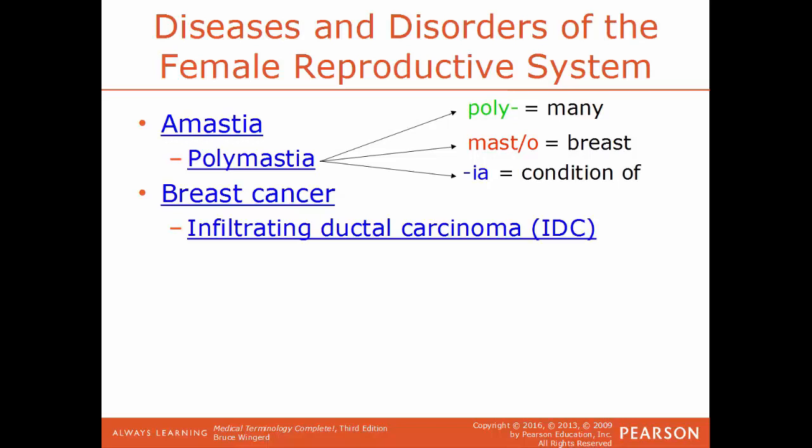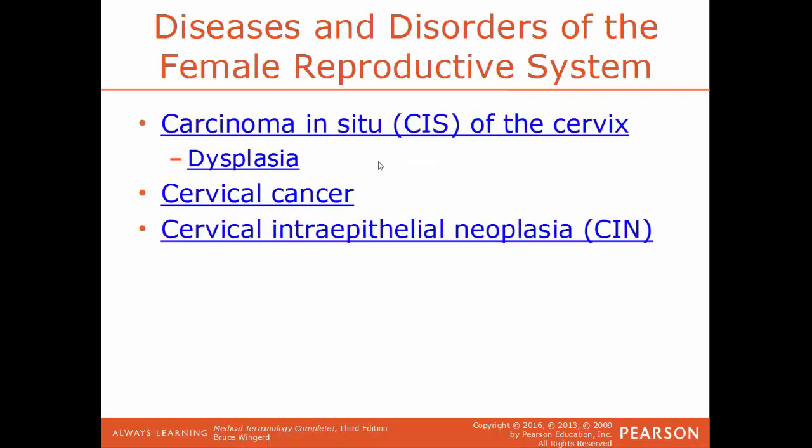Breast cancer is a general term regarding cancer of the breast. IDC, infiltrating ductal carcinoma, also known as invasive ductal carcinoma, is the type of cancer that has begun growing in the duct and has invaded the fatty tissue of the breast outside of that duct — it's the most common type of breast cancer. CIS, carcinoma in situ of the cervix, is called in situ because the cancerous cells have remained in the place where they developed, confined to where they originated — this is cervical cancer in the very early stages, also referred to as stage 0 cancer.